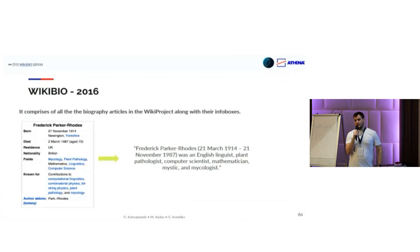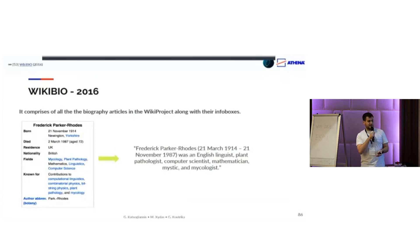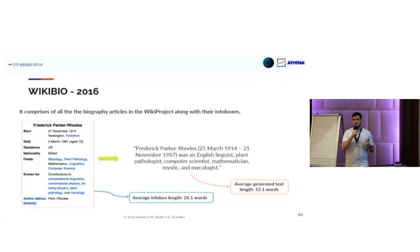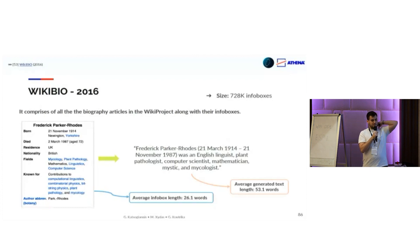WikiBio has all the biography articles from the Wiki project along with their infobox — in other words, the Wikipedia infobox of every famous person, along with the verbalization extracted from the Wikipedia text for that specific infobox. The average infobox length is around 26 words and the generated text is 53 words. Generally speaking, it is an easy dataset because we have a lot of data — 700,000 infoboxes — and they are really domain and task specific, making the problem fairly easy to solve.